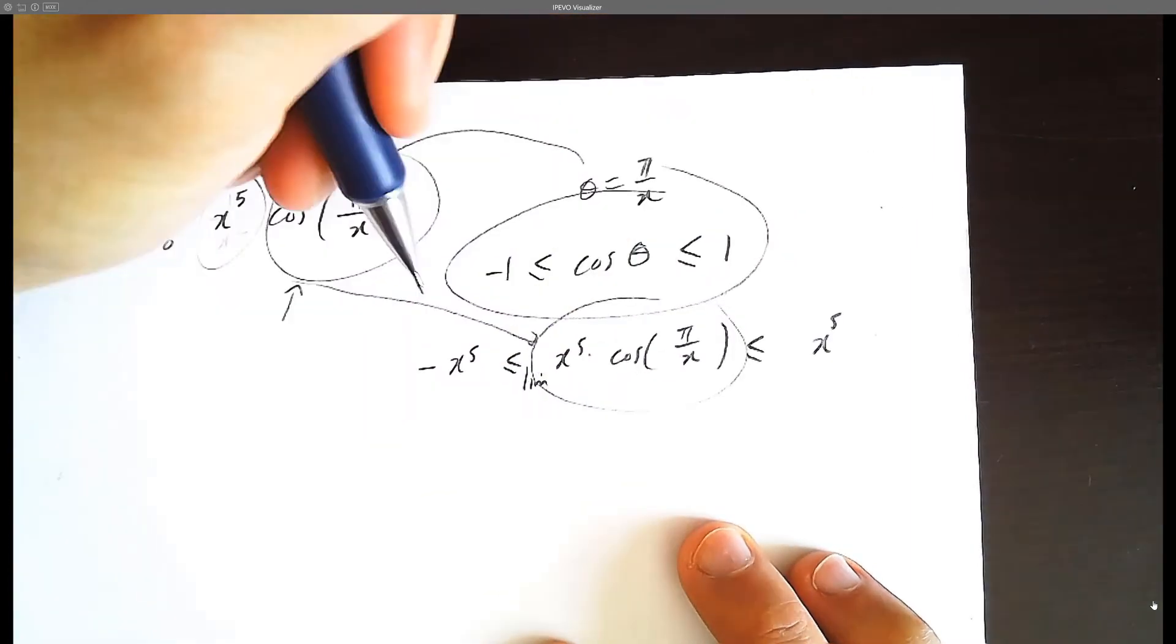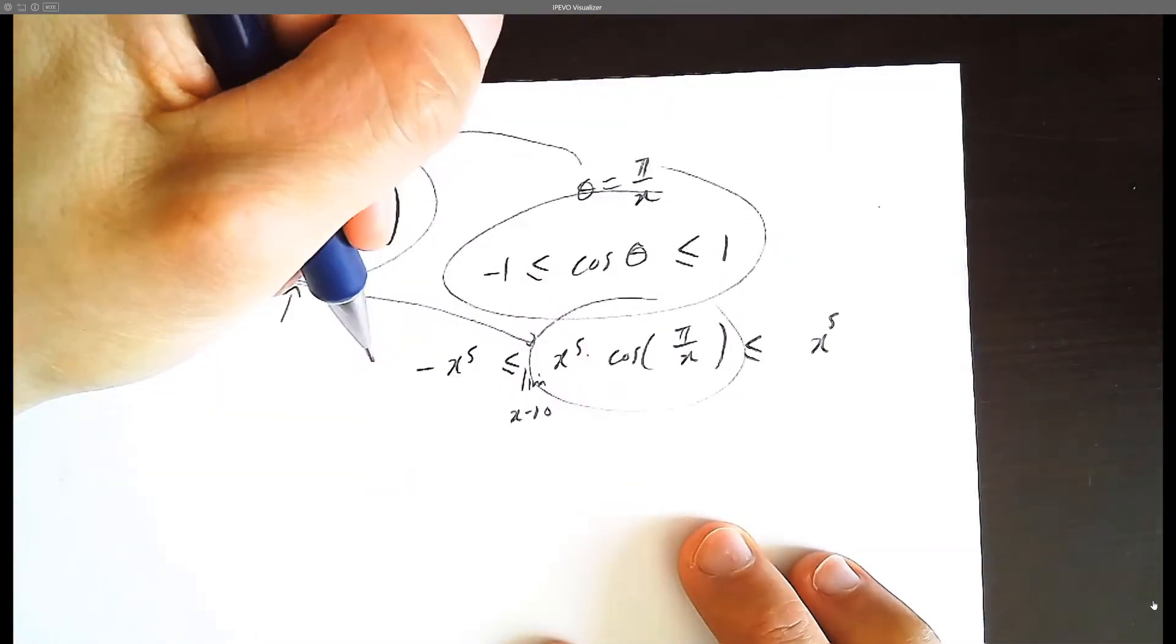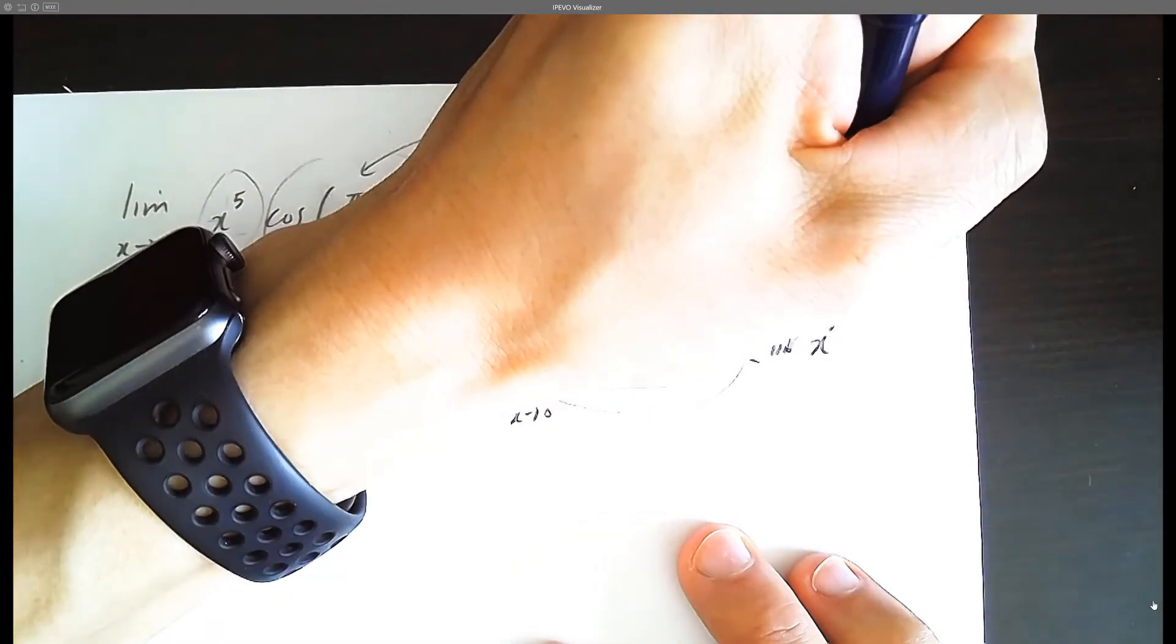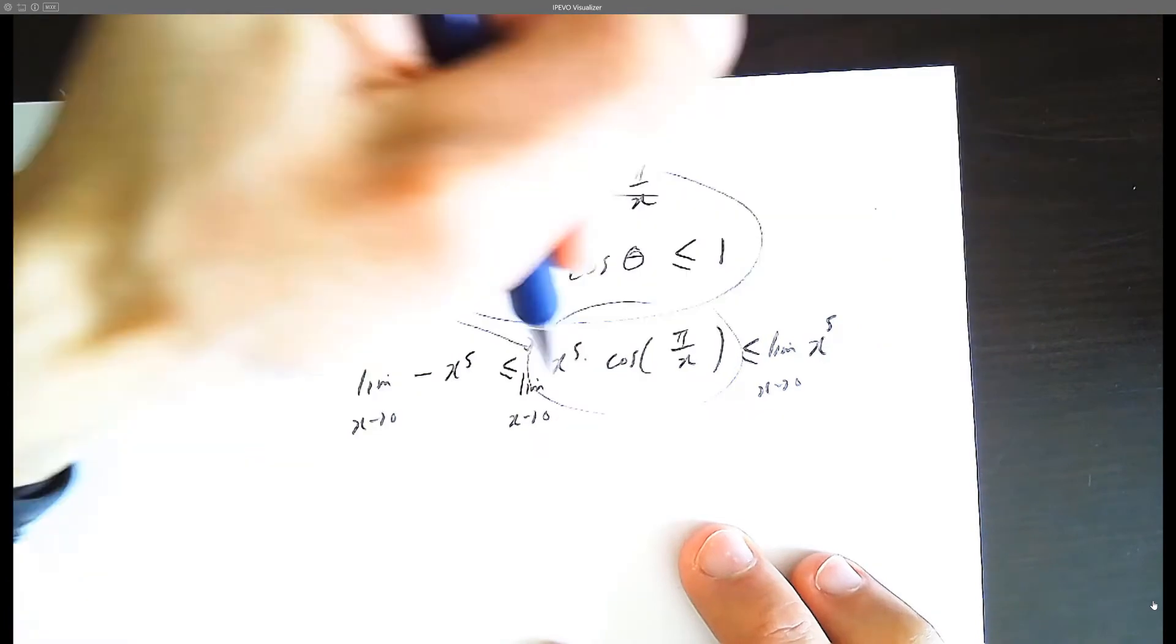So you're allowed to apply the limit operator, x approaches 0, to each of the three parts.